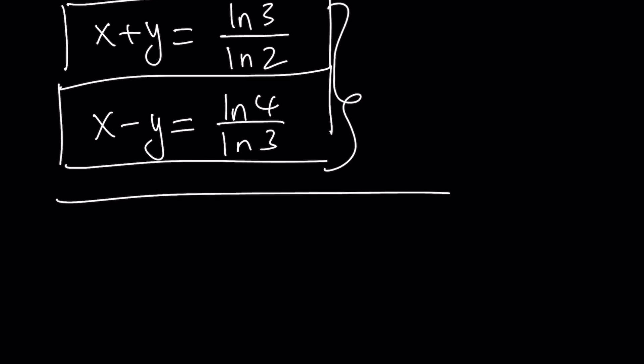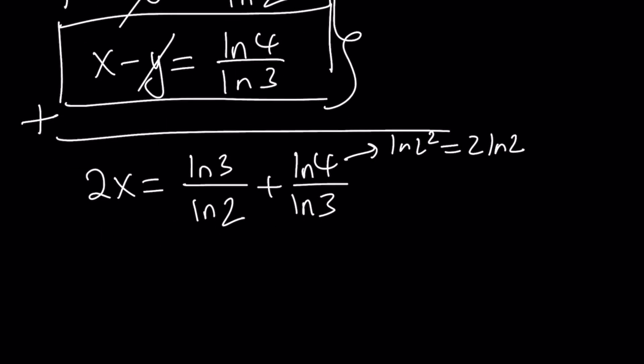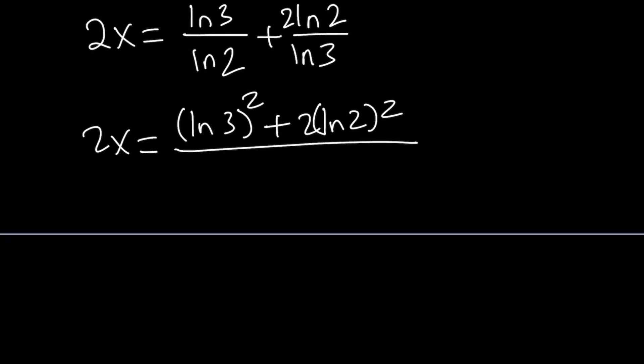Let's use elimination. Add these equations up. The y cancels out. We get 2x equals ln 3 over ln 2 plus ln 4 over ln 3. By the way, ln 4 can be written as ln 2 squared, which turns into 2 ln 2. Replace ln 4 with 2 ln 2. And then let's make a common denominator. This gives us ln 3 squared plus 2 times ln 2 squared divided by ln 2 times ln 3. And if we divide both sides by 2 to get the value of x, we get rid of this 2 right here. So that is the value of x.